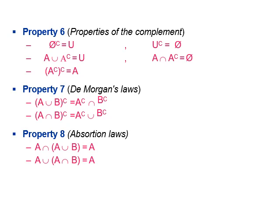De Morgan's Law states: the complement of A ∪ B equals Aᶜ ∩ Bᶜ, and the complement of A ∩ B equals Aᶜ ∪ Bᶜ. Absorption laws state: A ∩ (A ∪ B) = A, and A ∪ (A ∩ B) = A. Just take note of these formulas as we will not be applying them in solving problems, but they are important properties of sets.